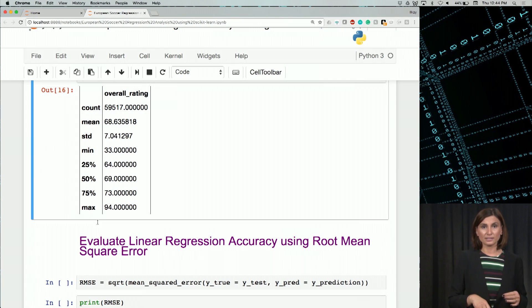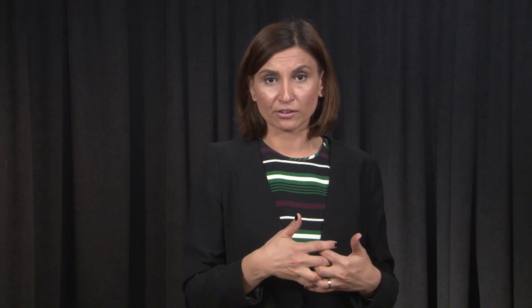So RMSE captures the variation of the predicted value, as you would remember, from the observed value. So an RMSE score of zero means perfect prediction with no errors, which is the ideal scenario, which almost never happens.